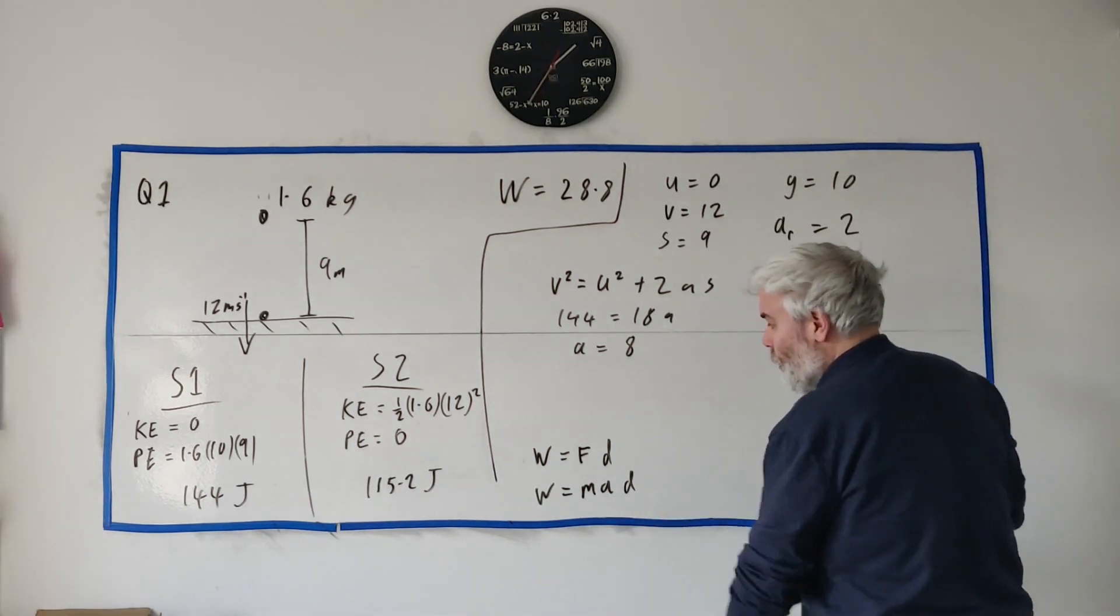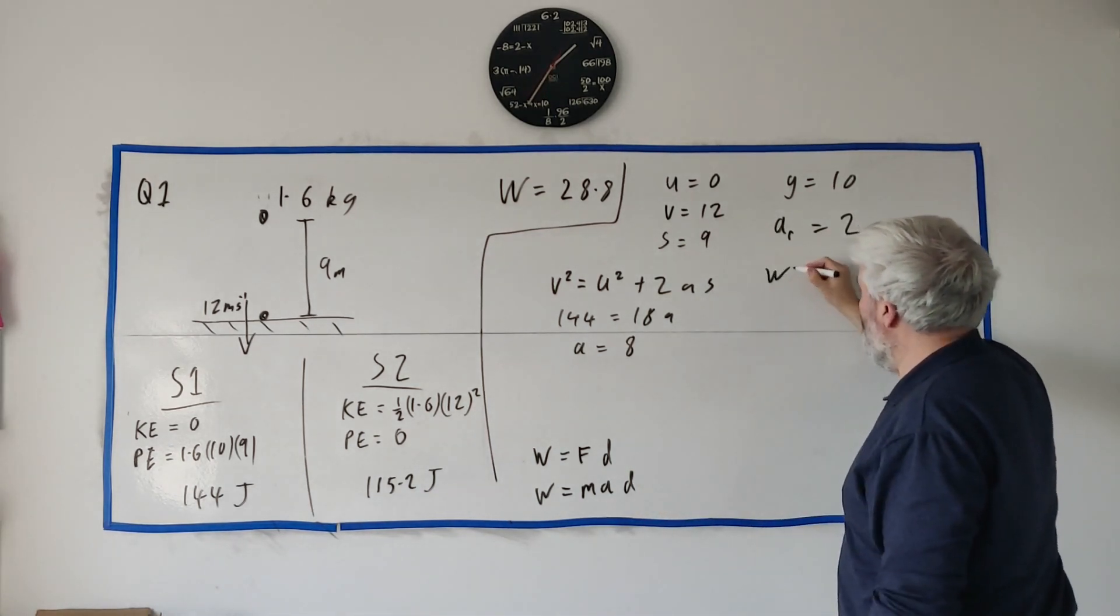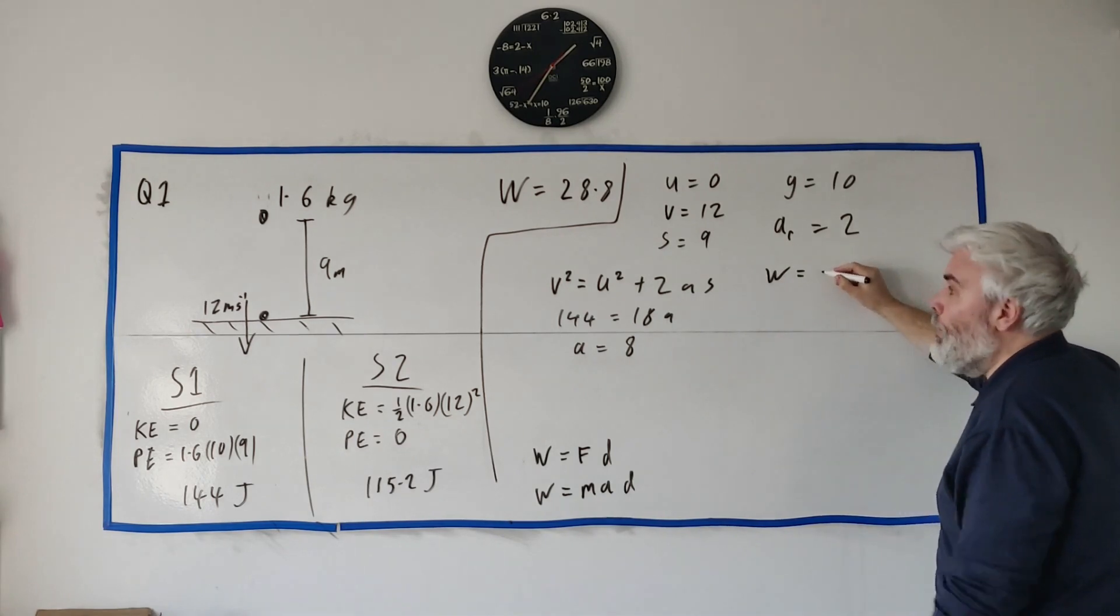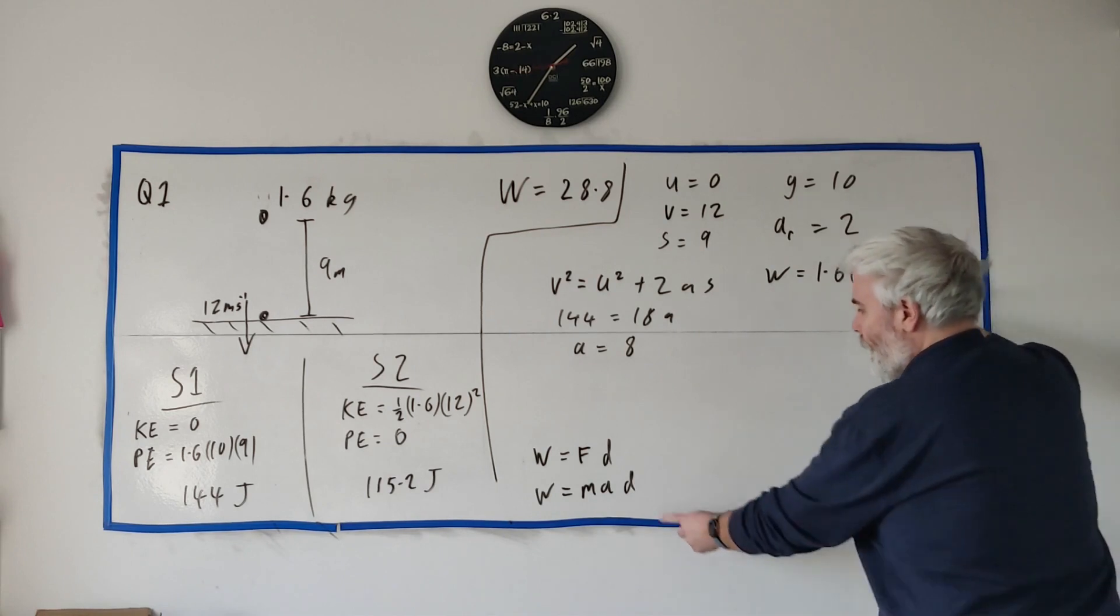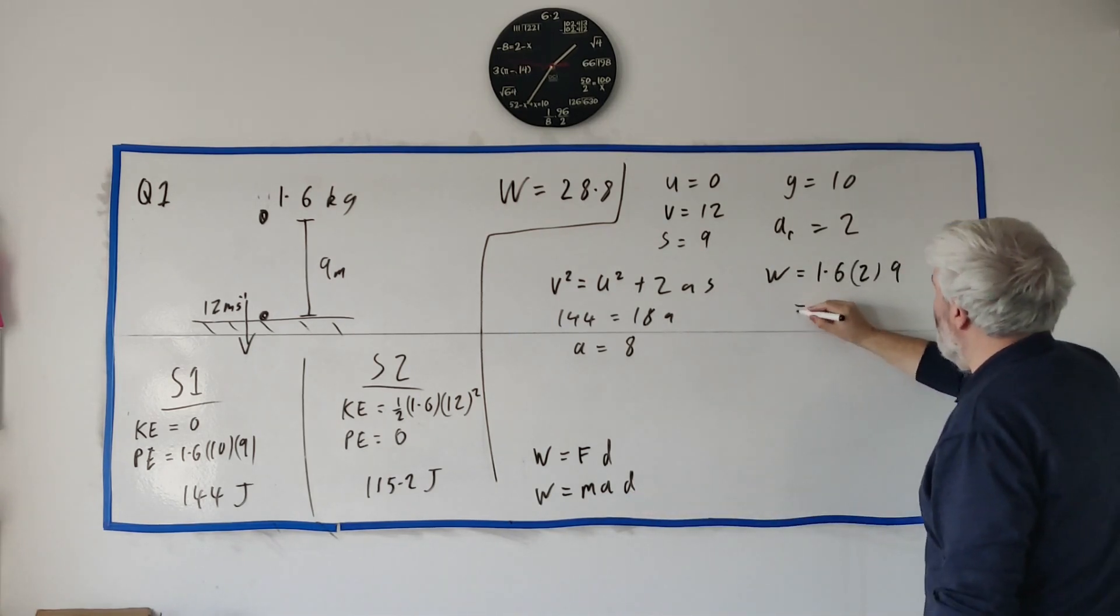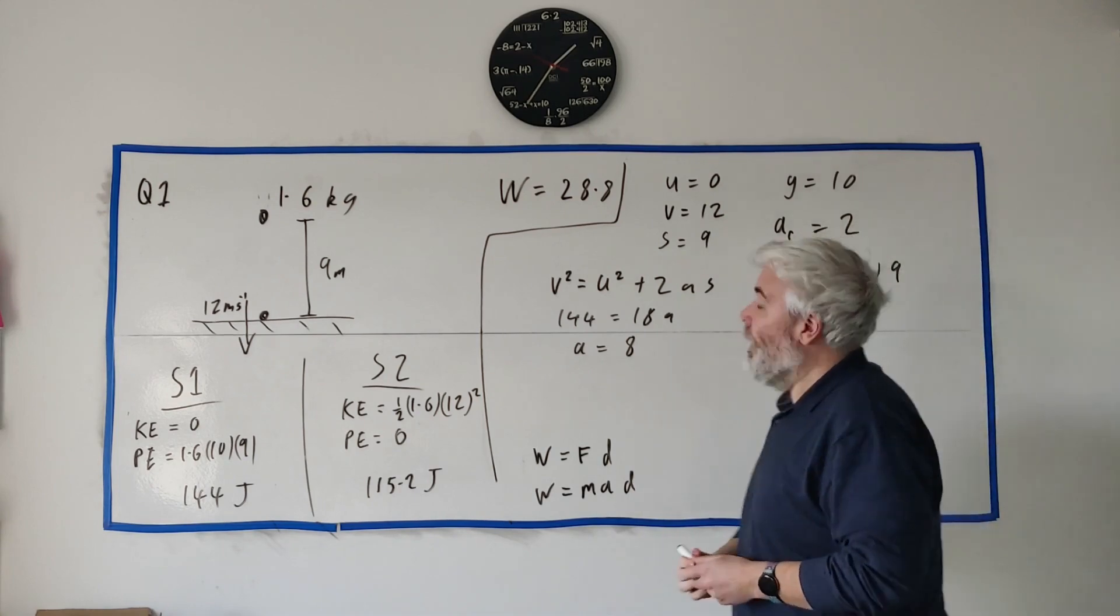And that's the one I'd fill into this formula here. So w would be equal to m is 1.6, a is 2, and d is 9. If we put all that in we should get 28.8.